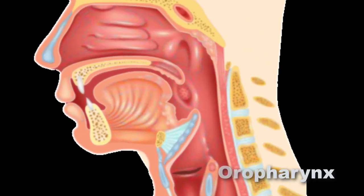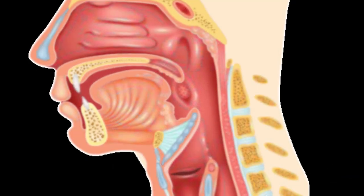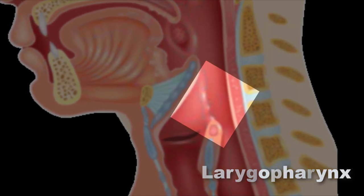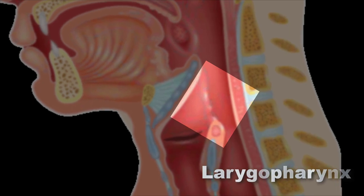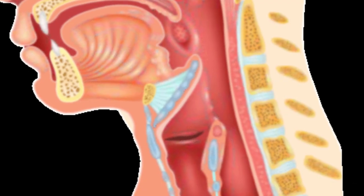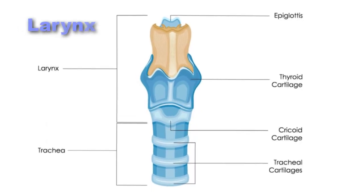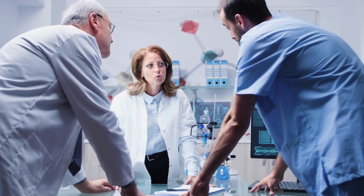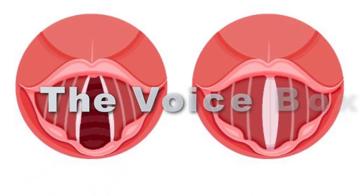The oropharynx is the space between the posterior margin of the soft palate and the epiglottis. The laryngopharynx lies mostly posterior to the larynx and extends from the superior margin of the epiglottis to the inferior margin of the cricoid cartilage, at which point the esophagus begins. The larynx is a cartilaginous chamber. Its primary function is to keep food and drink out of the airway. It has also evolved the additional role of producing sound and is commonly called the voice box.